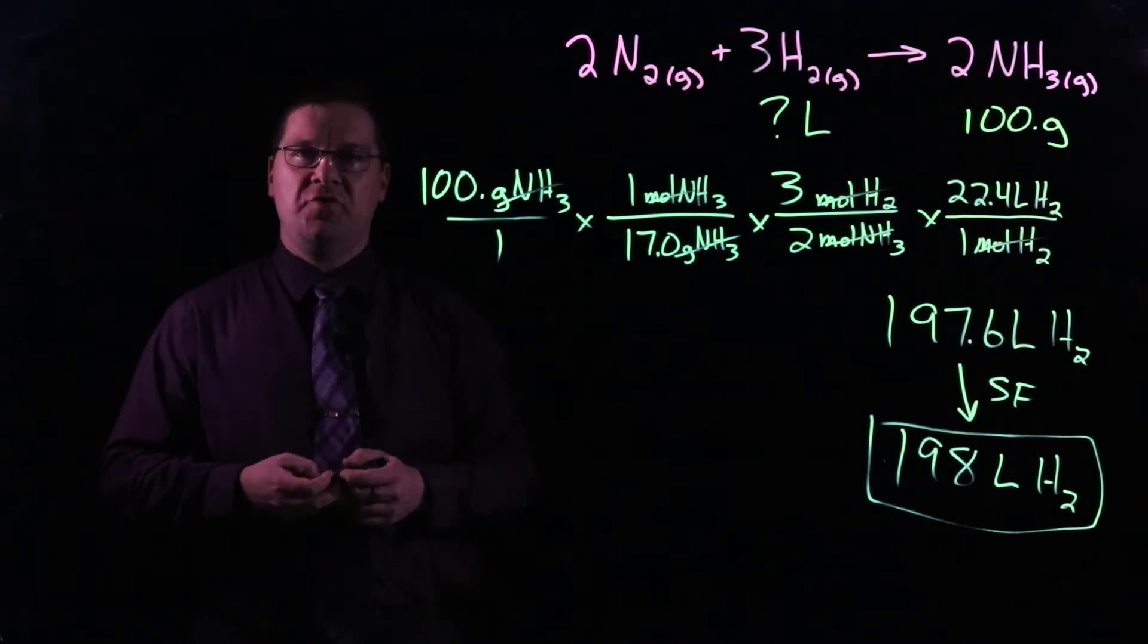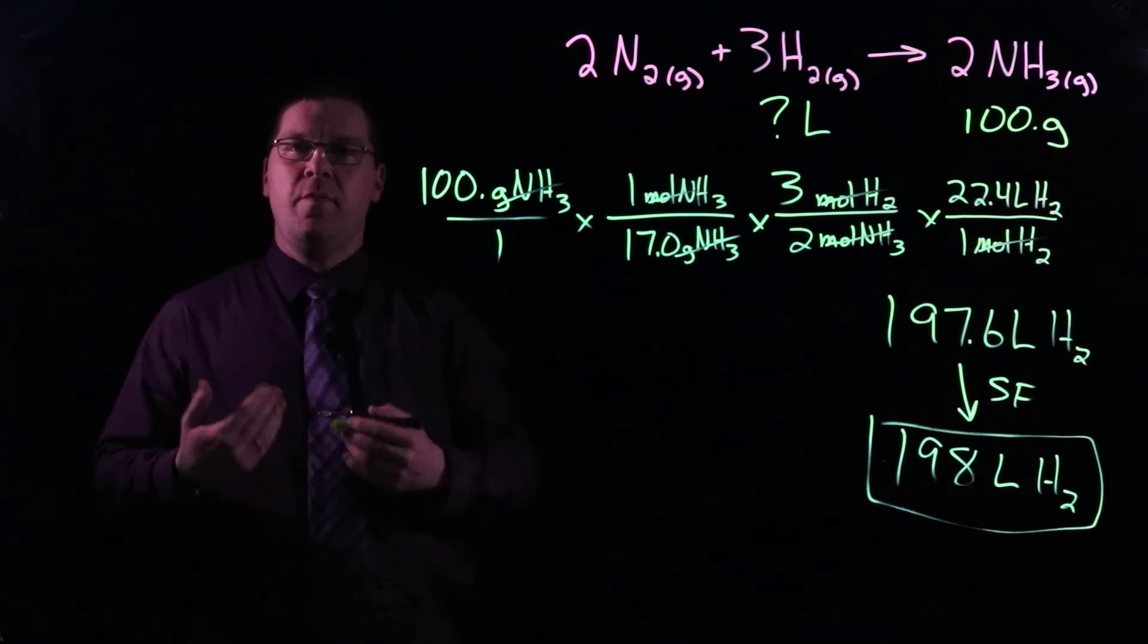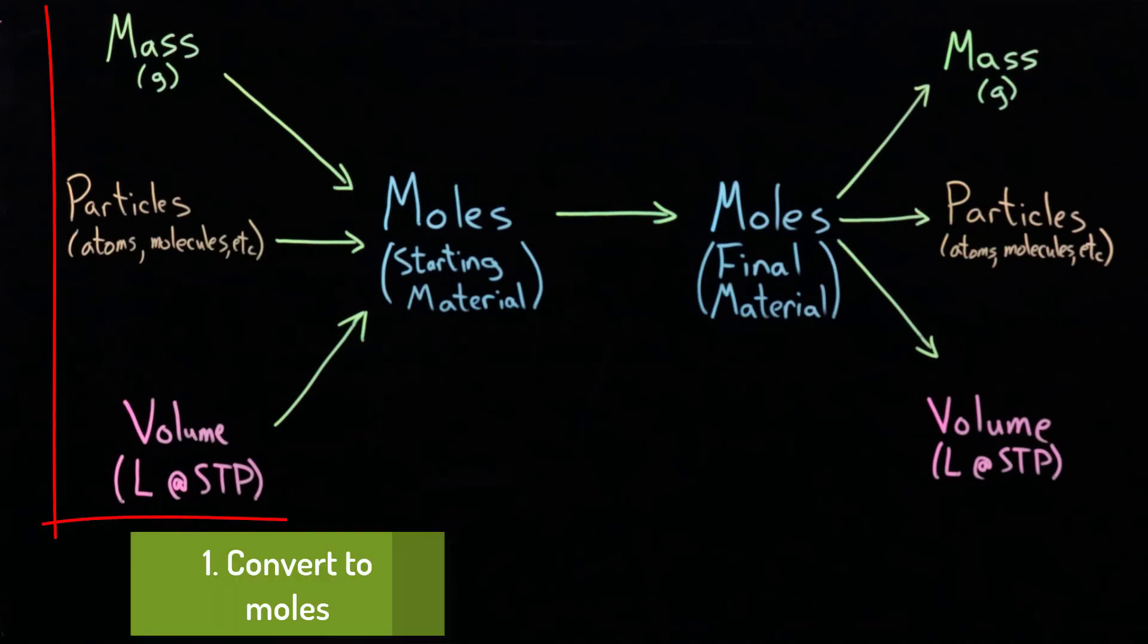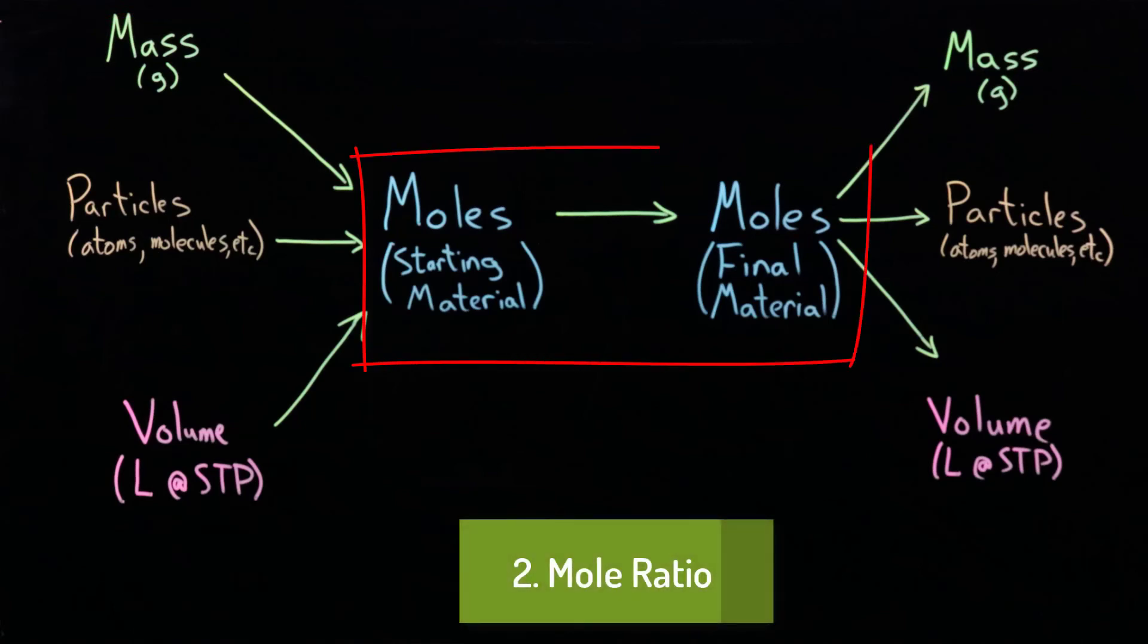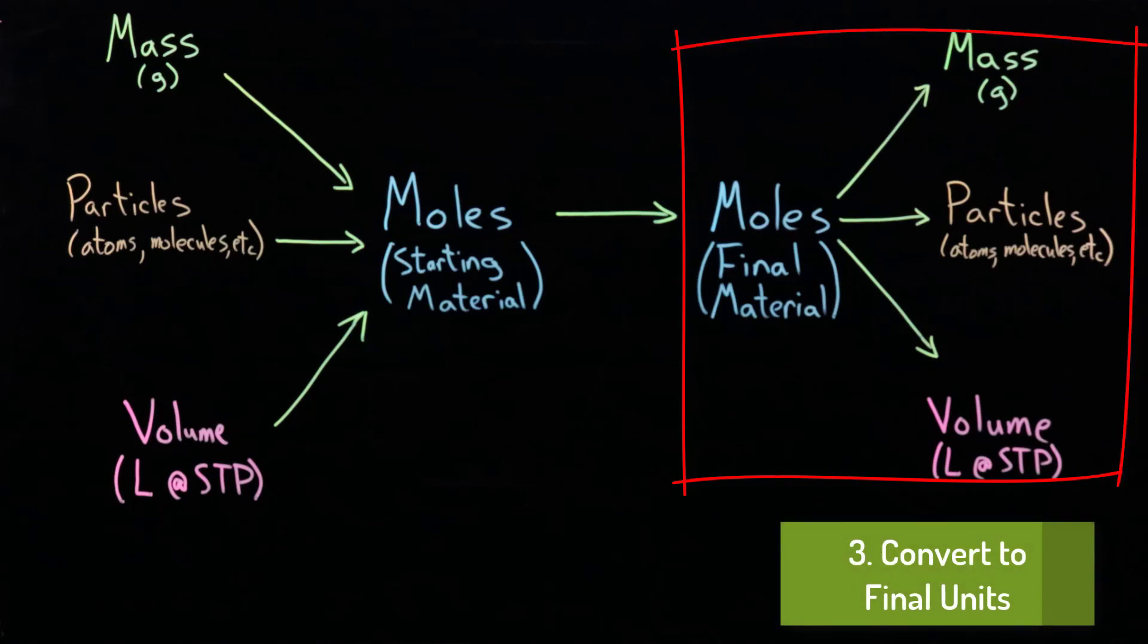So whatever kind of stoichiometry problem you are asked to solve, the same basic steps are used. The first thing is to convert from your given units, be it mass, be it atoms or molecules or volume, convert that to moles. Then use the mole ratio, which is based on the coefficients in the balanced equation, to convert from starting material to final material. And the last step will then be to convert to whatever the desired units are, again, using those conversion factors of molar mass, Avogadro's number, or molar volume, depending on what you're asked to solve for.